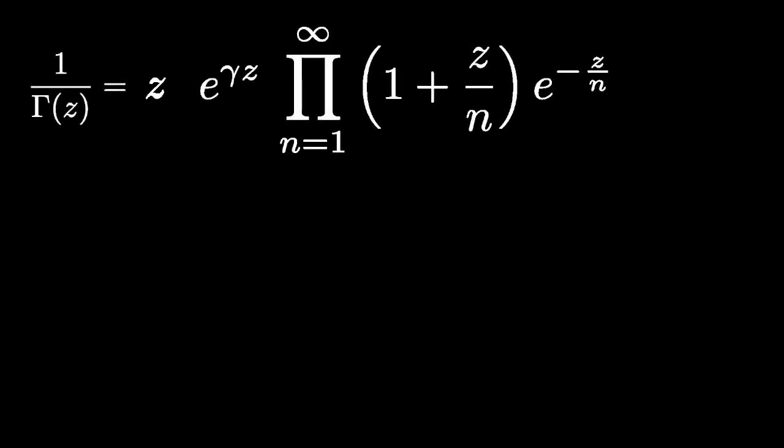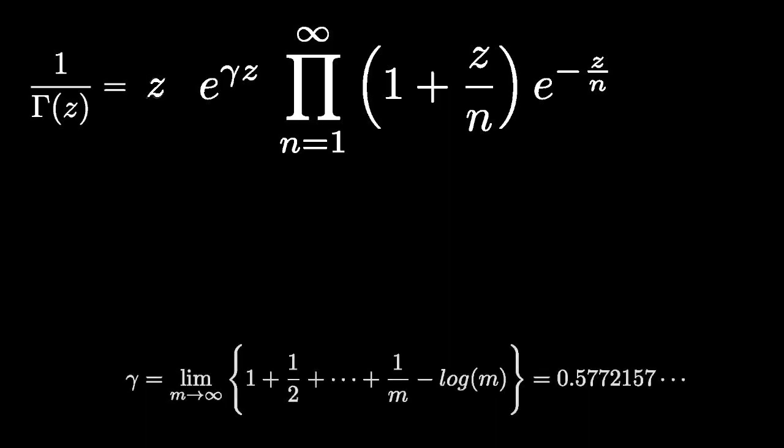As we saw in the last video, Weierstrass defined the gamma function by the equation 1 over the gamma function of z is equal to z times e to the gamma z times the product from n equals 1 to infinity of 1 plus z over n times e to the minus z over n. The constant gamma is known as the Euler-Mascheroni constant.